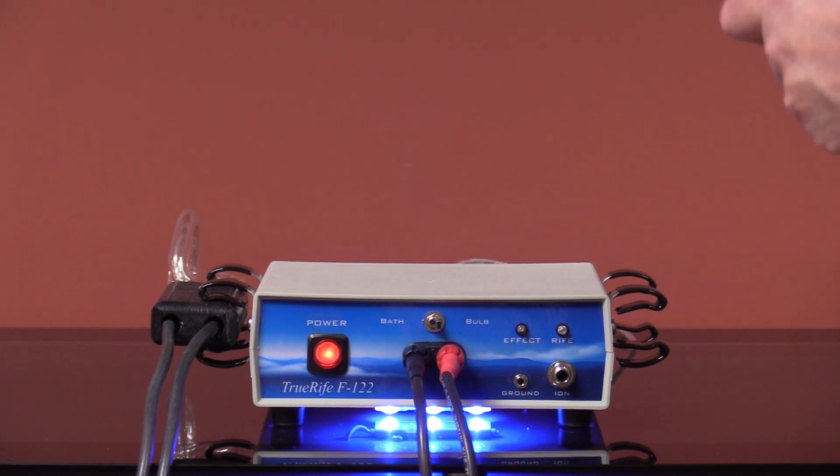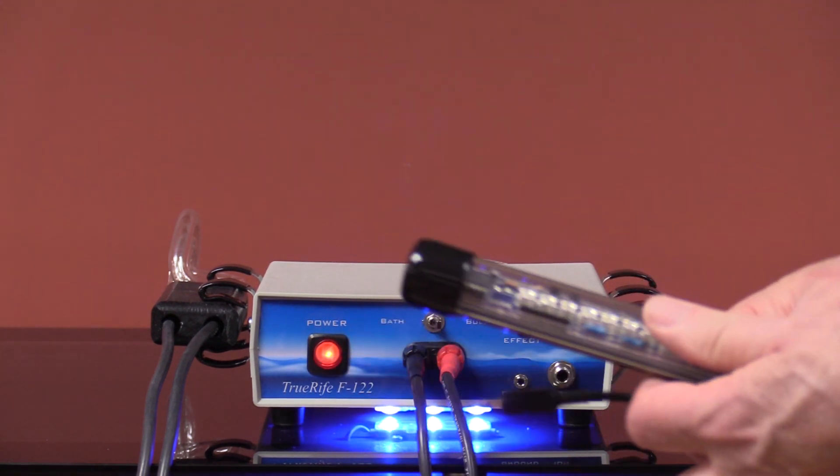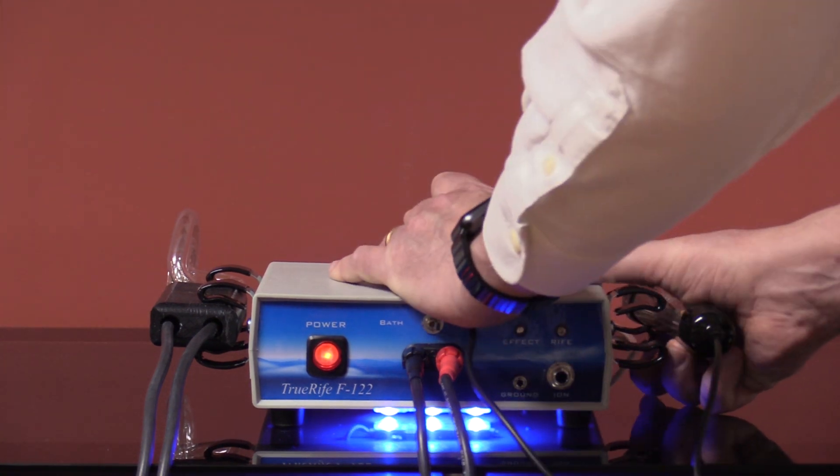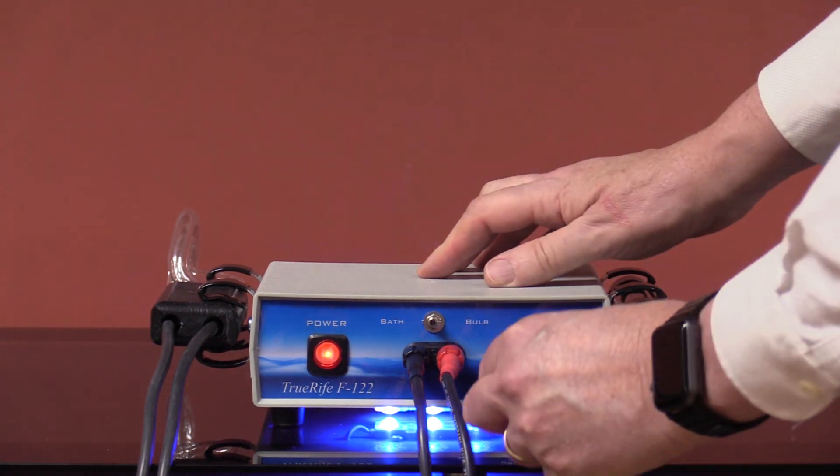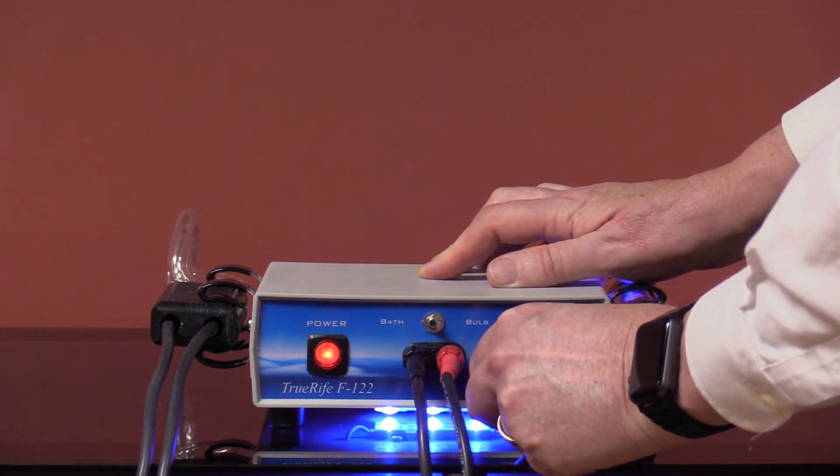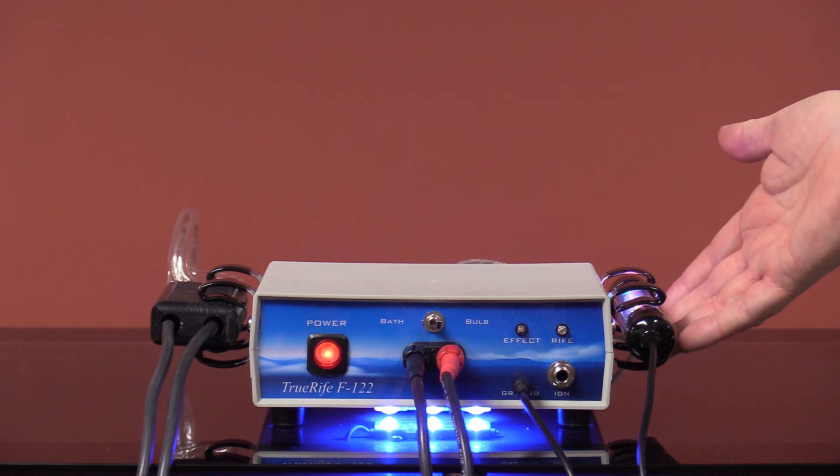In this case, this is a color wand, it's an optional device. If you should happen to own one of these, it would plug into the side of the F-122 like this. Then you simply put this in this hole here and you have your grounding.